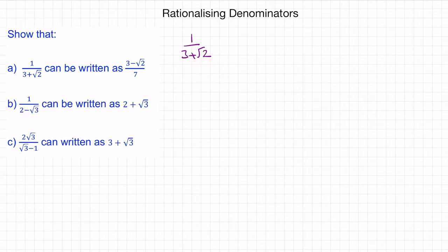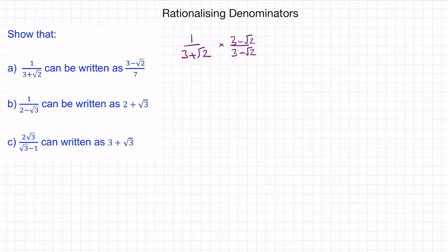So we're going to rationalize the denominator by multiplying it by 3 minus root 2. And we have to do the same on top as well, because then we are, in effect, multiplying this fraction by 1, so we don't change its value.